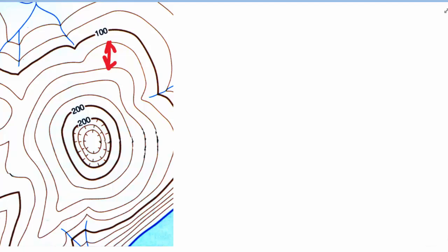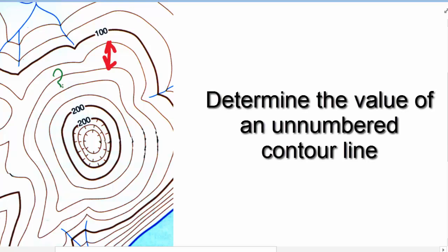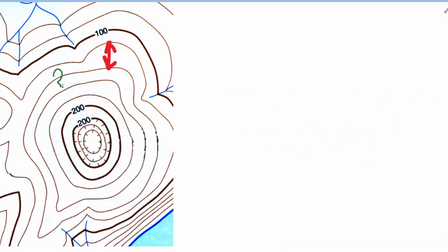The second problem is we'll need to identify the contour value of any particular line that's unnumbered. So in order to answer the second question, we actually need to answer the first. So let's get started.